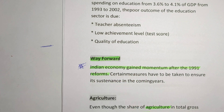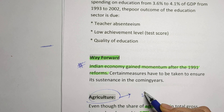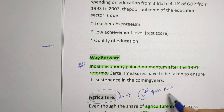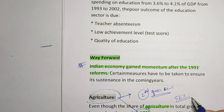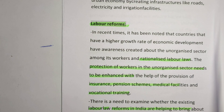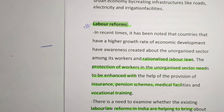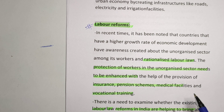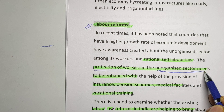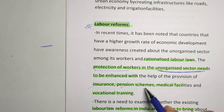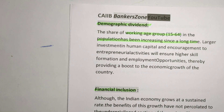For the way forward: in agriculture, there is an urgent need for a second green revolution. Agriculture contributes only 17 percent to GDP, but more than 52 percent of our employment is provided by the agriculture sector. On labor reforms, we need to protect workers in the unorganized sector — mainly workers where there are no unions — and provide them insurance, pension schemes, and medical facilities.